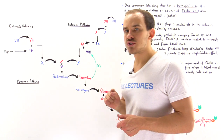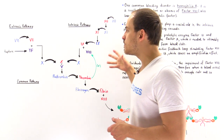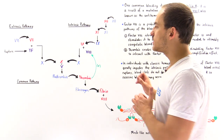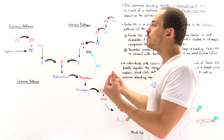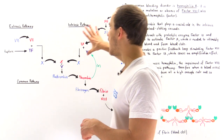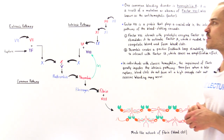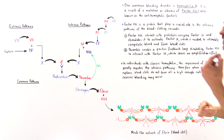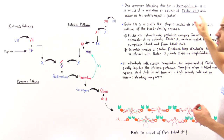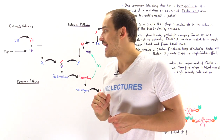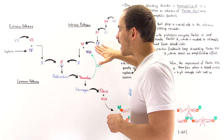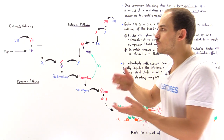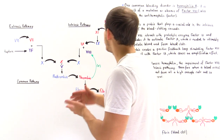Thrombin is also important because it creates many different positive feedback loops that amplify the effect. Now let's look at the intrinsic pathway, because it is the intrinsic pathway that is affected by hemophilia A. In the intrinsic pathway, following exposure of the surrounding tissue after the cut in the blood vessel, that stimulates the proteolytic activation of factor XII.